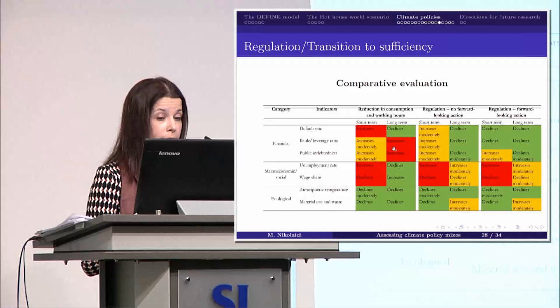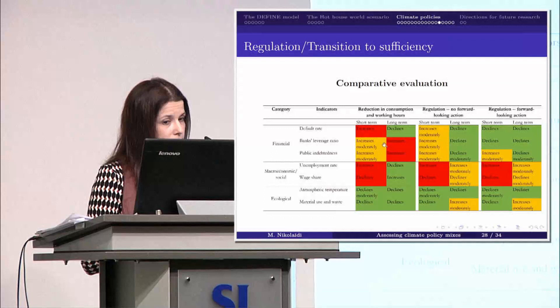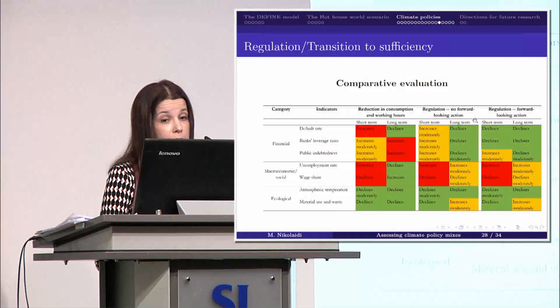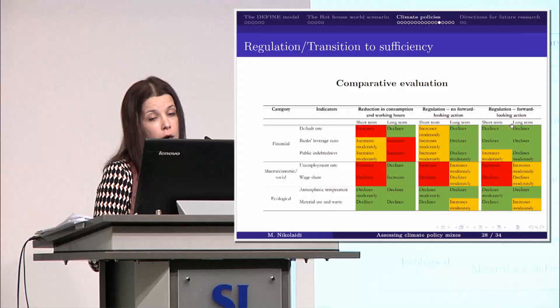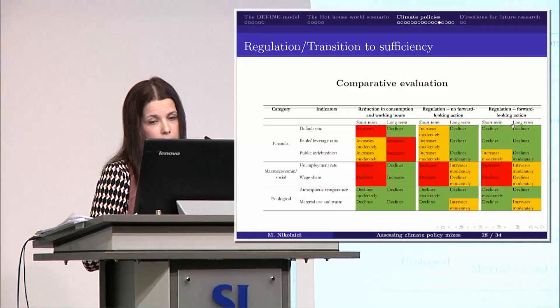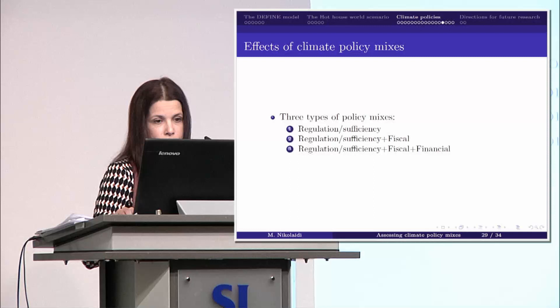When we have the reduction in consumption patterns and working hours, many problems arise — not only with the unemployment rate and functional income distribution, but also the banking sector is affected. When we have only regulation in which companies do not react, we have some similar problems as well. Some of these problems can be addressed when we have forward-looking scenarios — in particular, the banking sector default rate does not increase.